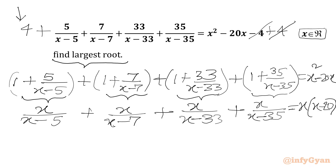Now if I plug in x equal to 0, the LHS becomes 0 plus 0 plus 0 plus 0, which is 0, and the RHS will be 0 times minus 20, which is also 0. So x equal to 0 is our first real solution of the equation.